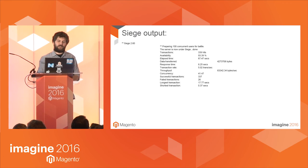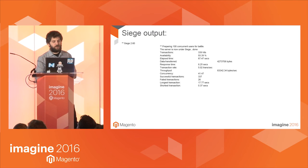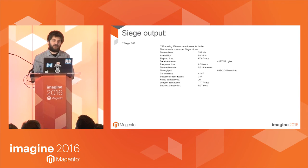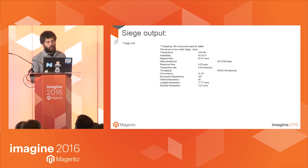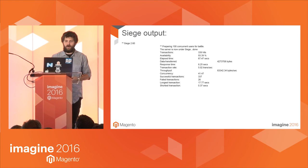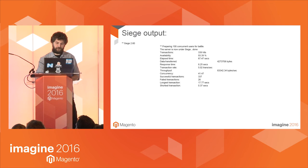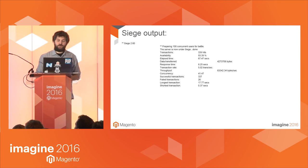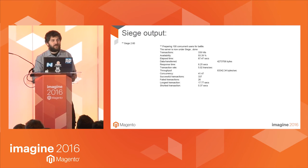Availability is the percentage of socket connections successfully handled by the server. The elapsed time is the duration of the entire Siege test. Data transfer shows the sum of data transferred to every Siege simulated user. Response time shows the average time it took to respond to each simulated user request. The transaction rate is transactions divided by elapsed time. Throughput shows the average number of bytes transferred every second. Concurrency indicates the average number of simultaneous connections. Longest and shortest transactions show the amount of time of the longest and shortest transactions.